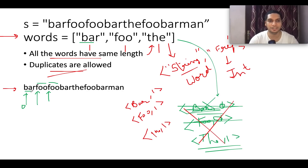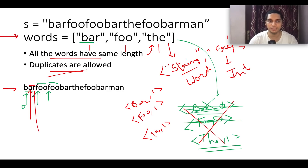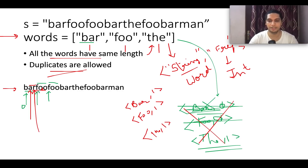At index 1, we extract a word of length 3: 'arf'. This is not part of the map, so there can never be a valid substring starting from this index. We abort immediately. Moving to index 2, we extract 'rfo' — also not part of the map. We abort again. Each time a word is not found in the copy map, we immediately break and move to the next starting index.